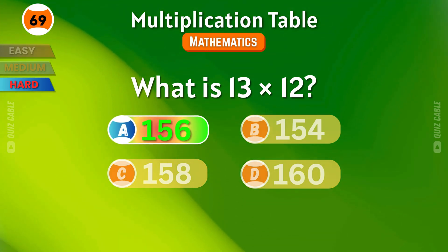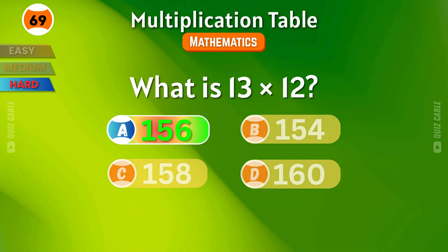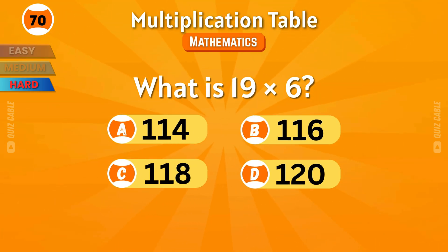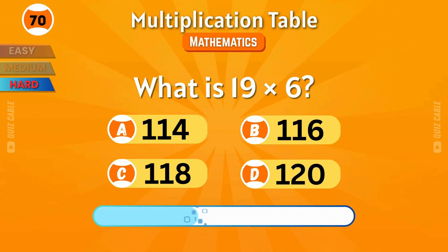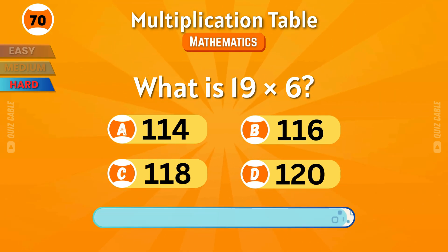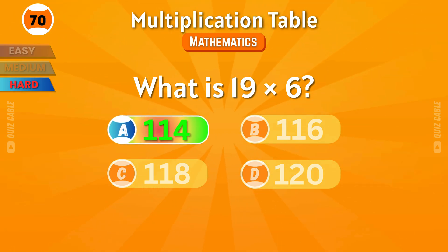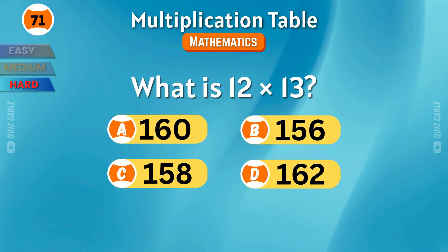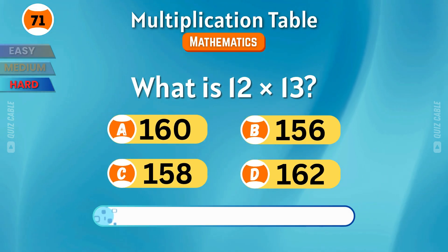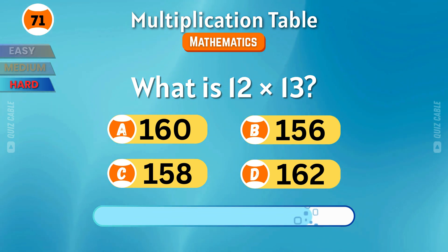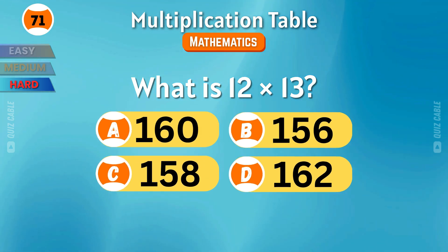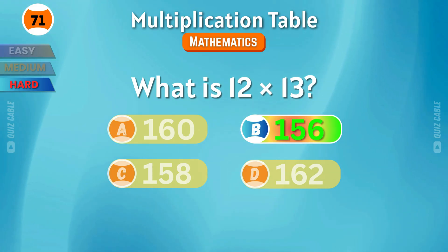What is 13 times 12? That makes 156. What is 19 times 6? Yes — 114. What is 12 times 13? That's 156.